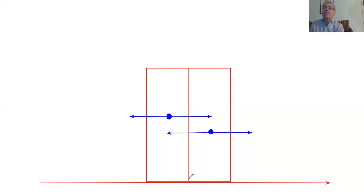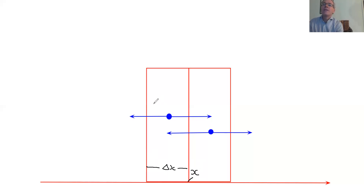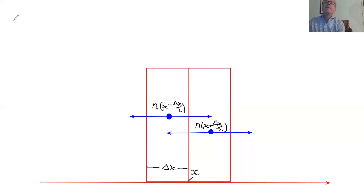Just to make that explicit: this location is the X location, and the box has a width delta X. This represents N — the number of particles — at location X minus delta X equal to two, and this is the location X plus delta X equal to two.